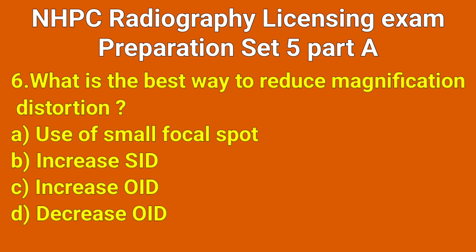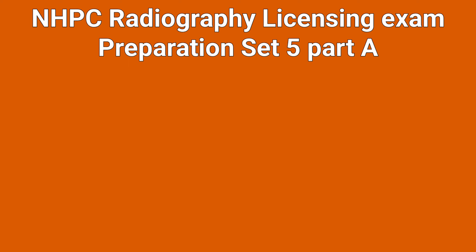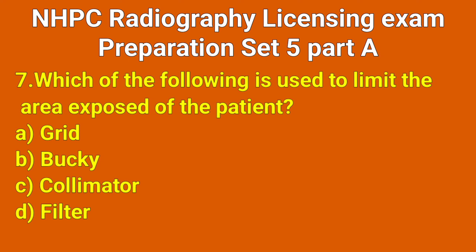Question number 6: What is the best way to reduce magnification distortion? Correct answer: option A. Question number 7: Which of the following is used to limit the area exposed of the patient? Correct answer: option C, collimator.